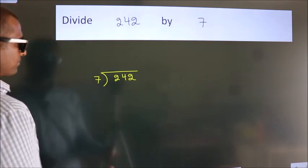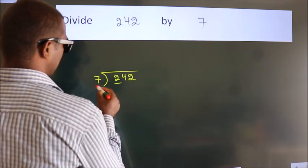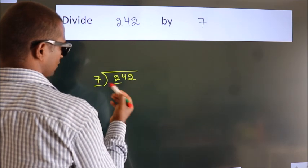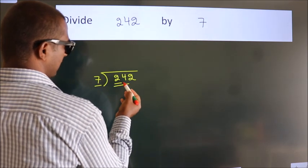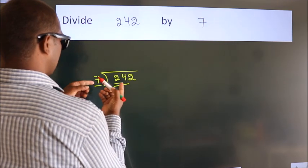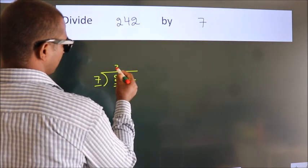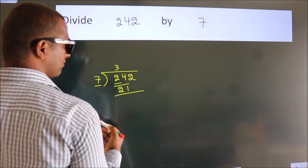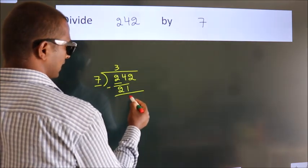Next, here we have 2, here 7. 2 is smaller than 7, so we should take 2 numbers, 24. A number close to 24 in the 7 table is 7 threes, 21. Now we should subtract. We get 3.